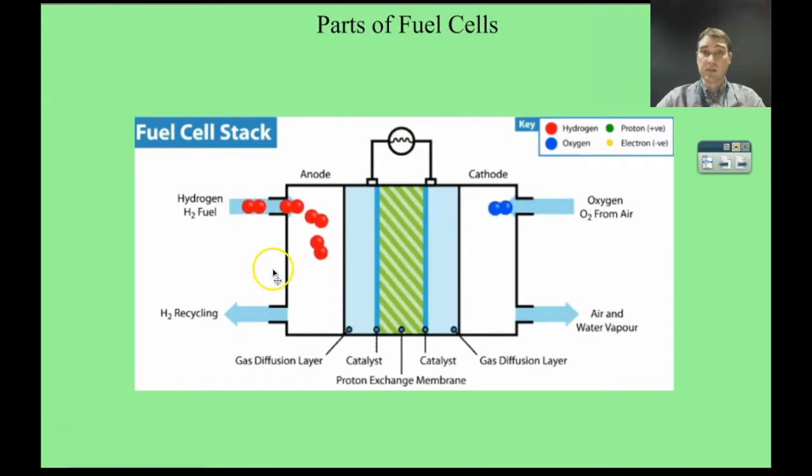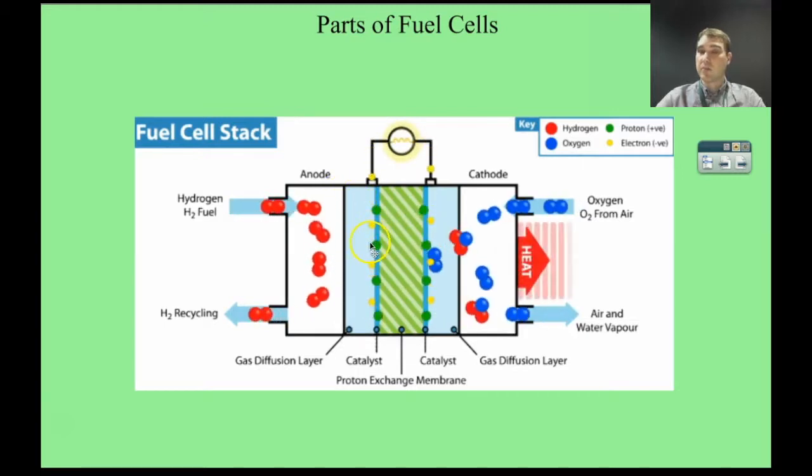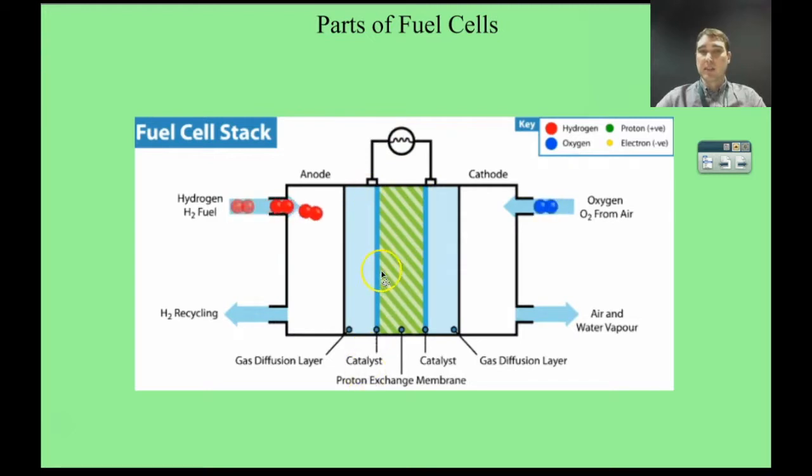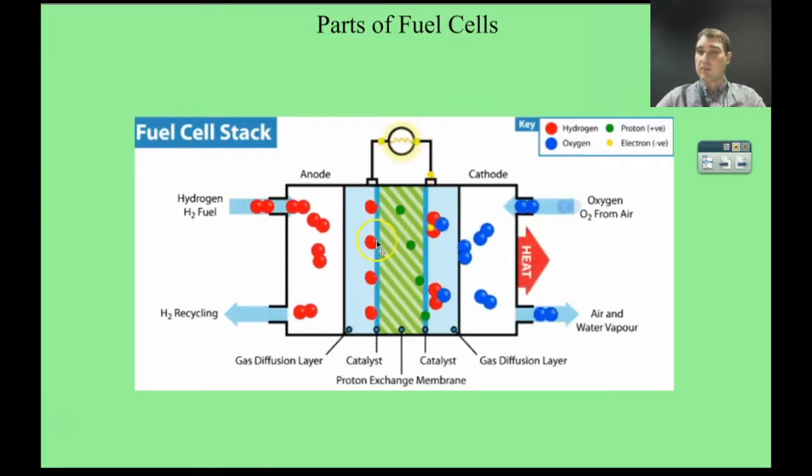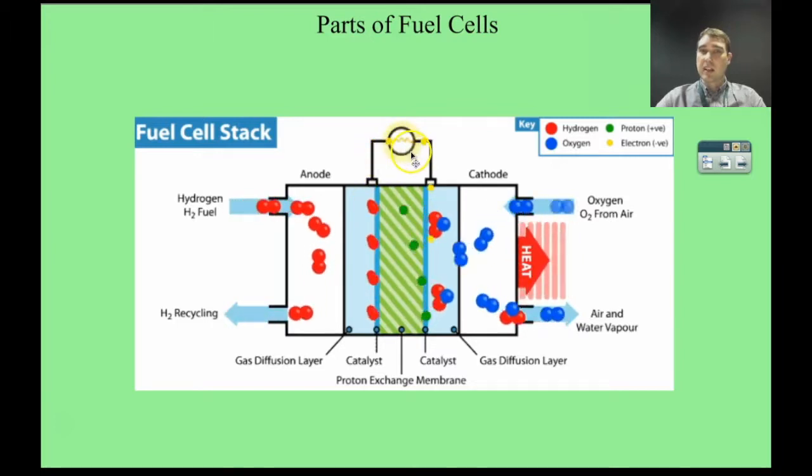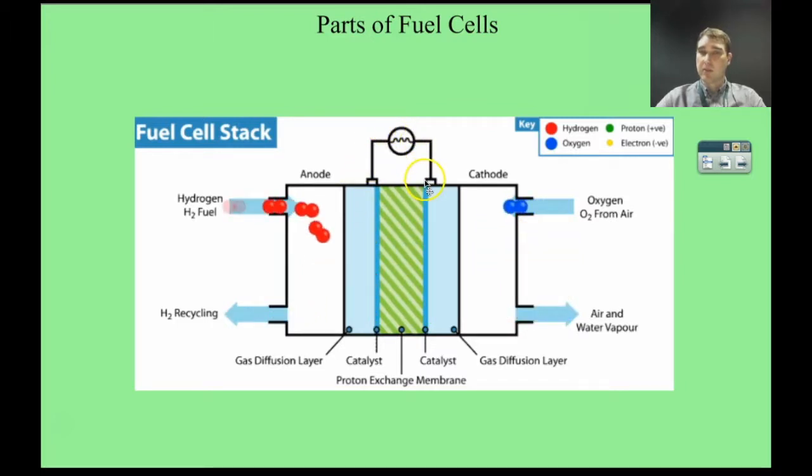So let's have a look at this fuel cell. Here we can see the hydrogen coming in. We have a catalyst on the anode that causes the hydrogen to break up into hydrogen ions. Those are the hydrogen ions passing through, the protons. When the hydrogen breaks up into hydrogen ions we get electrons being generated. They pass through the external circuit.